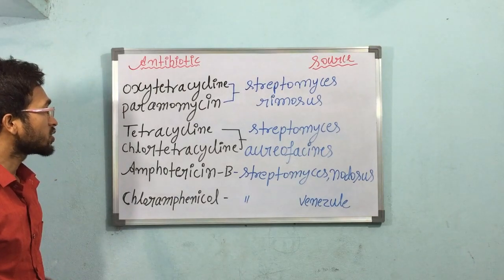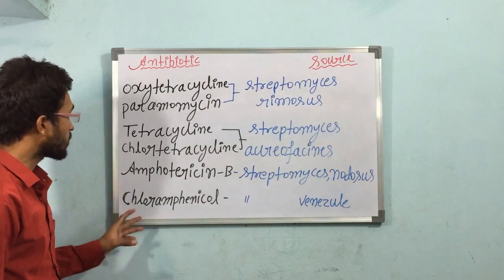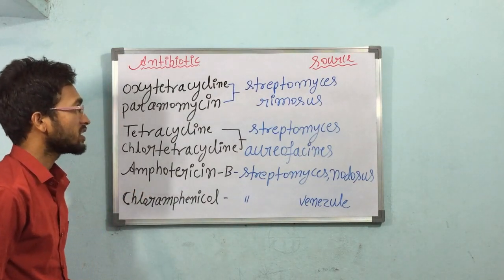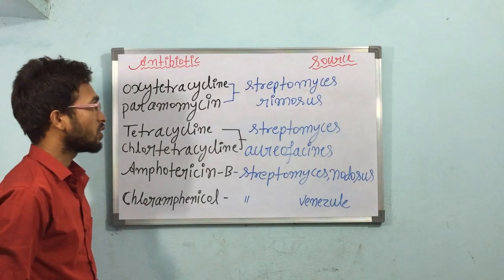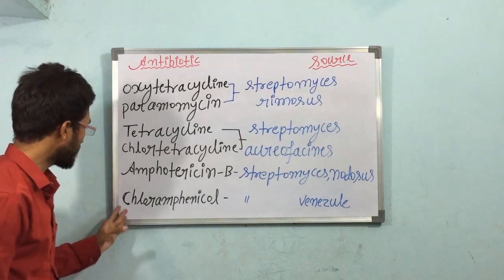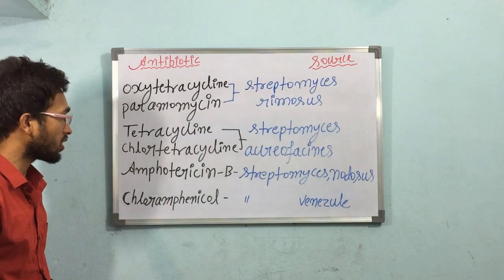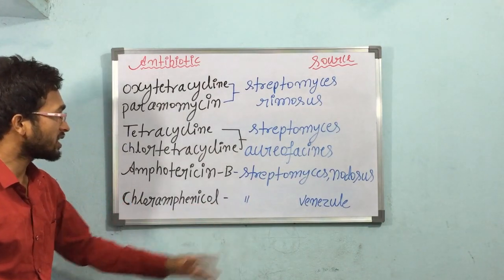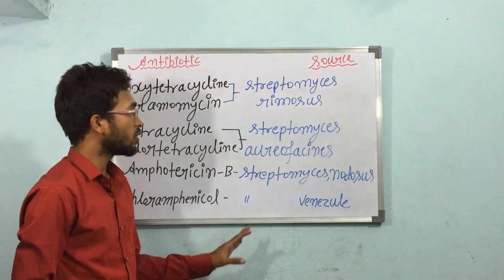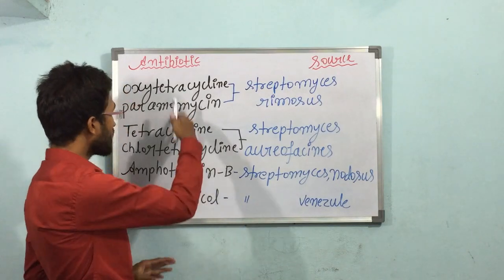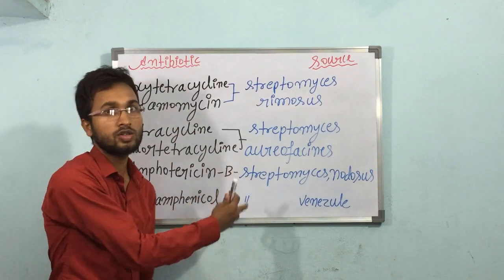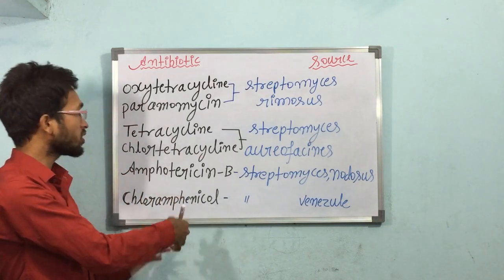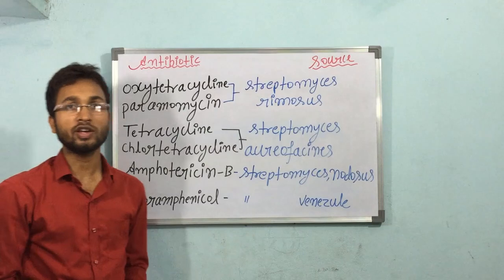The next antibiotic is Amphotericin B. The source of Amphotericin B is Streptomyces nodosum. And then the next is Chloramphenicol — for Chloramphenicol, the source is Streptomyces venezuelae. So these are the antibiotics and their sources, meaning we can get these antibiotics from these microorganisms.